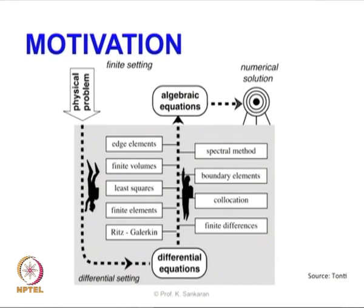What we are going to do now is we have a physical problem which is based on discrete sets of measurements. From here we are going to directly go into the algebraic equations which is also in the discrete set of equations, and then directly get numerical solutions. What does it mean?